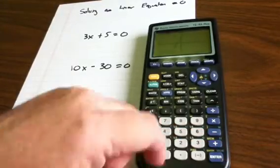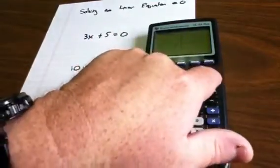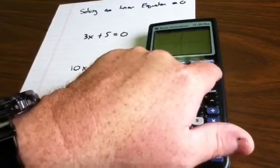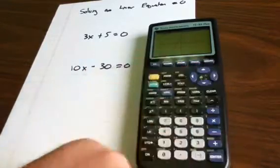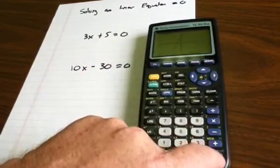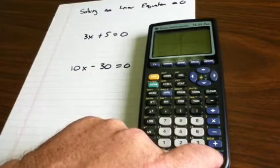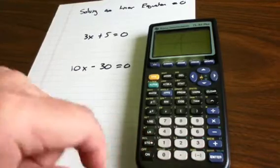Then it's going to ask for the right bound. So you use your right arrow and go to the right-hand side of the x-intercept and hit Enter. Then the word Guess comes up. Just hit Enter and that's going to give you the zero.